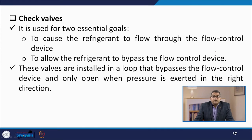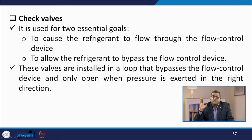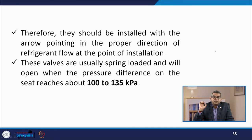The check valve is used for two basic essential goals: one is to cause the refrigerant to flow through the flow control device, and the second is to allow the refrigerant to bypass the flow control device. These valves are installed in a loop that bypasses the flow control device and open only when pressure is exerted in the right direction. They should be installed with the arrow pointing in the proper direction of refrigerant flow at the point of installation. These valves are usually spring loaded and open when the pressure difference on the seat reaches around 100 to 135 kilo Pascal.